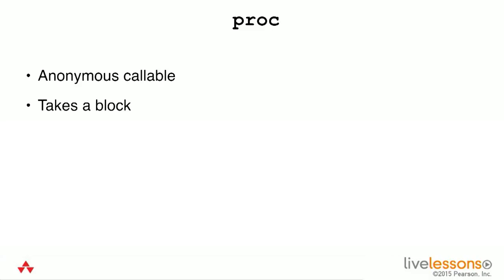When you create a proc via proc.new it takes a block, just like any of the innumerable methods we've taken a look at so far. One problem with procs is that unlike function calls they don't get a stack frame, and this can cause them to have incredibly confusing behavior. When you invoke the return keyword from within a proc it's going to actually return from the flow of control of the first calling site above the proc that itself has a stack frame.